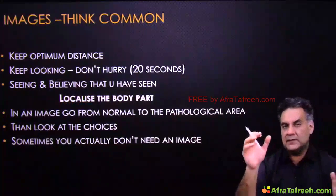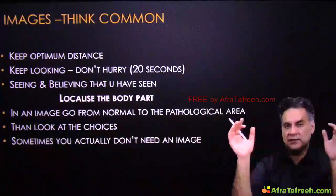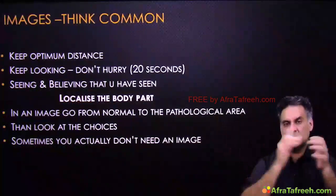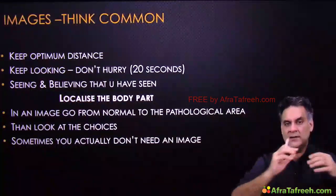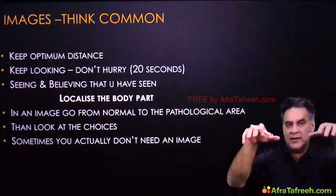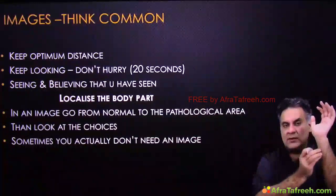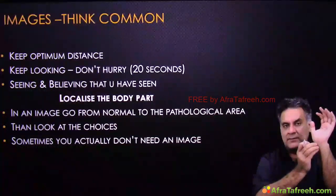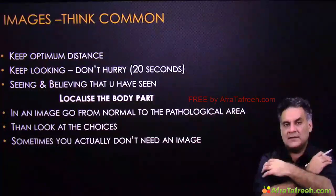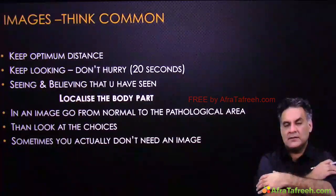These are common things they will ask: shoulder anterior, hip posterior, wrist rickets, lower end of radius GCT, axillary nerve, radial nerve, ulnar nerve, posterior interosseous nerve; in the lower limb — sciatic nerve and common peroneal nerve.